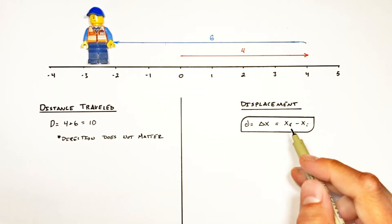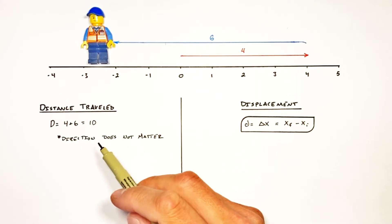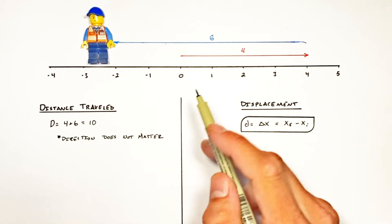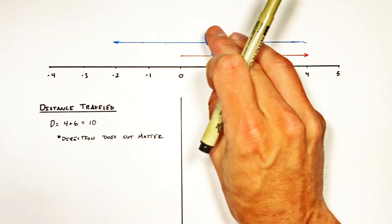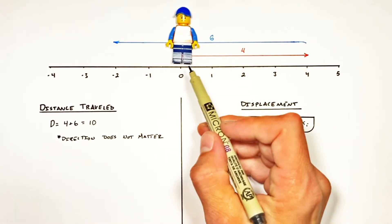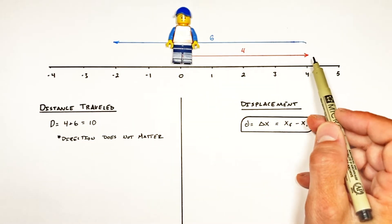And while at first glance it may seem like it's ultimately the same thing as distance traveled, realize it's not. And I'll show you why. If we look at the displacement of our little dude going back to the beginning right there. He started at a position of zero and went to a position of four.